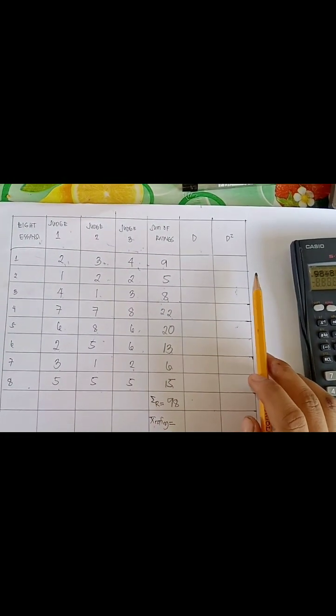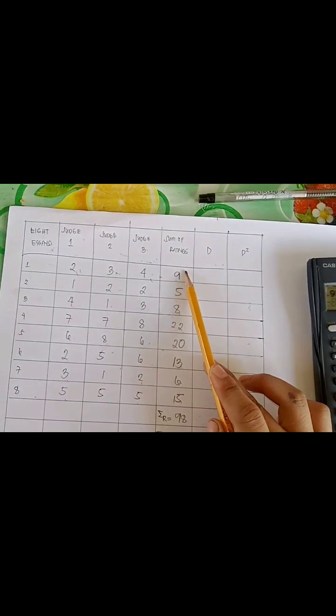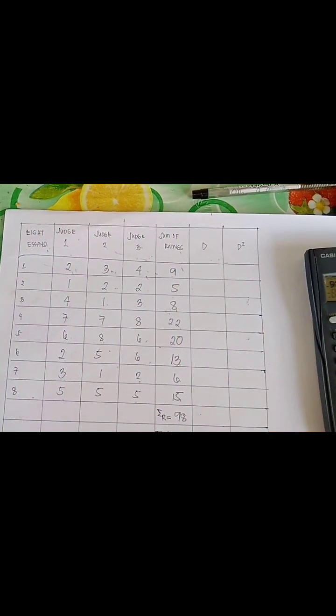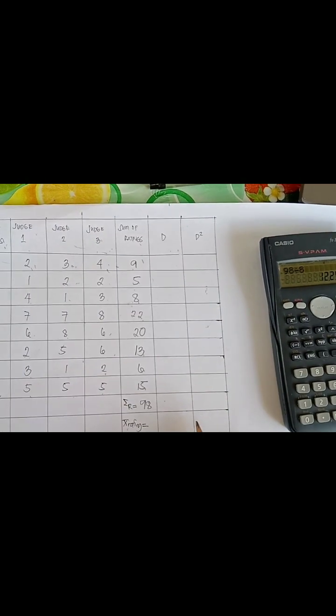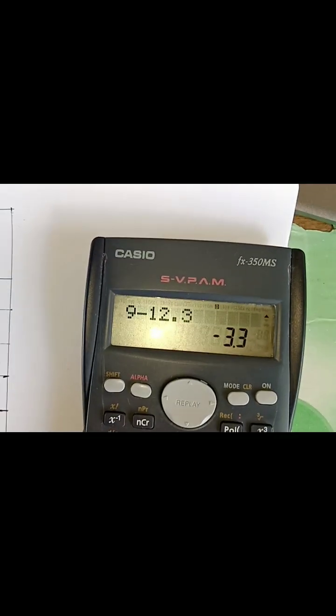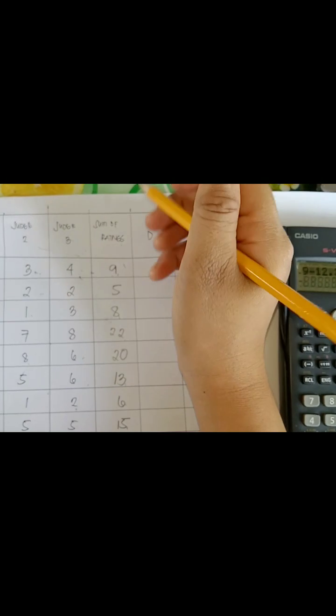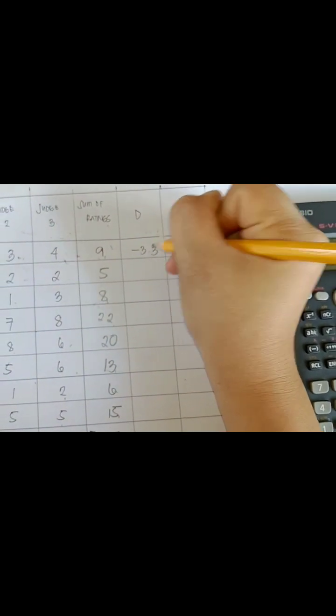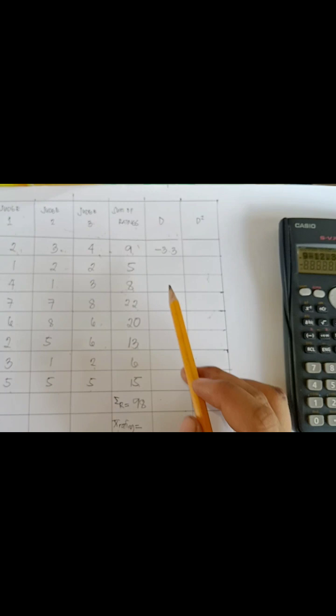So now we have the value of mean rating which is 12.25. We will follow one digit after the decimal point. And since the next of point 2 is 5, it can now be 12.3. 12.25 is equal to 12.3. And now we are able to proceed and get the D column by subtracting each value in the sum of ratings to the mean rating which is 12.3. And in this case, we have 9 minus 12.3 is equal to negative 3.3.